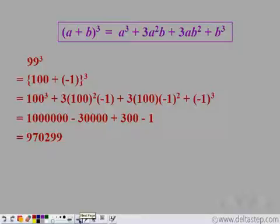You can verify this by normal multiplication and also see how much more time that takes. This identity is very special and useful because it helps us calculate cubes in a simpler and faster manner.